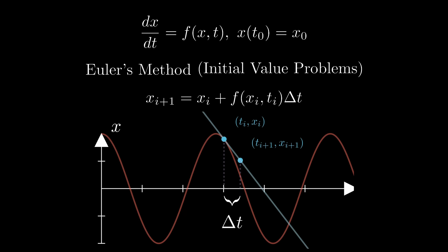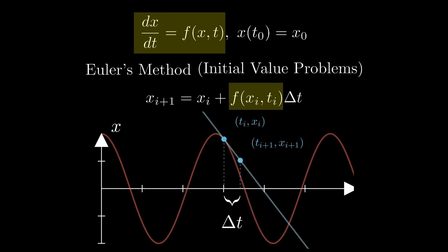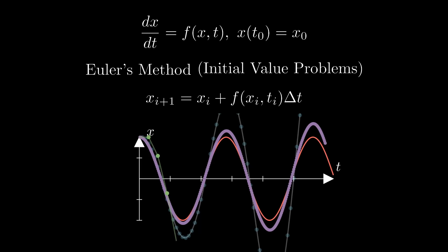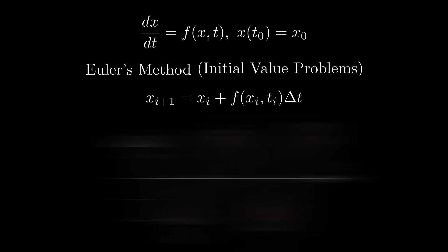We can do this because from our original equation we know that our function f(x, t) is the derivative at that given point. So we're essentially doing a mini linear approximation. As we saw before, given a small enough time step this can work. However, if the time step gets too large, then we run into issues.